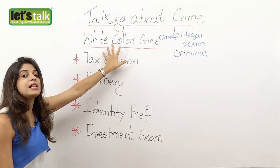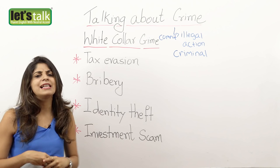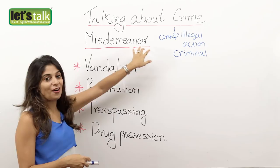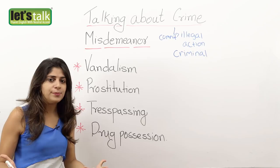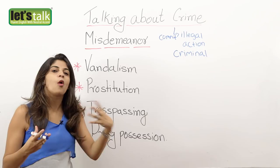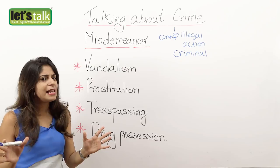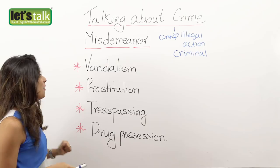So those are the crimes known as white collar crimes. Now let's have a look at some crimes which are less punishable. The next type of crimes are misdemeanors. Misdemeanors are not very serious crimes. Upon conviction, criminals may have to pay a small fine or face a few days of imprisonment. So they are less serious crimes. Let's look at the types.